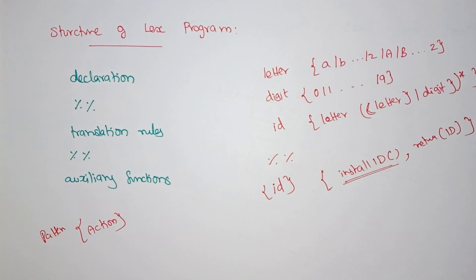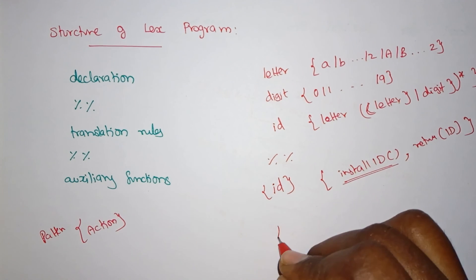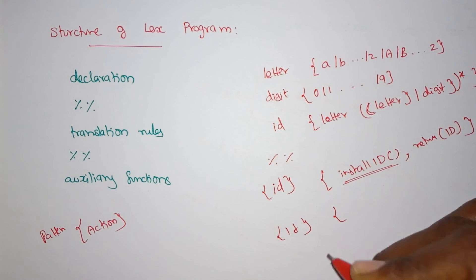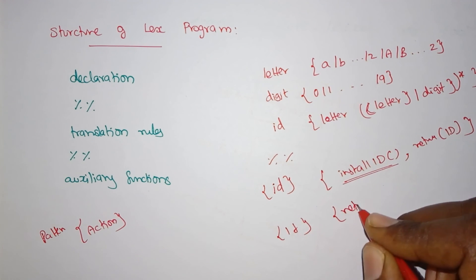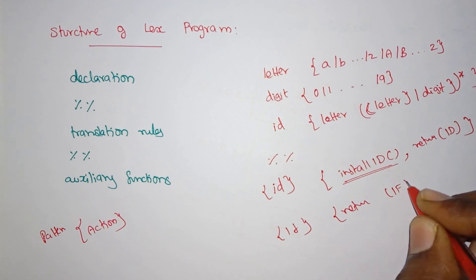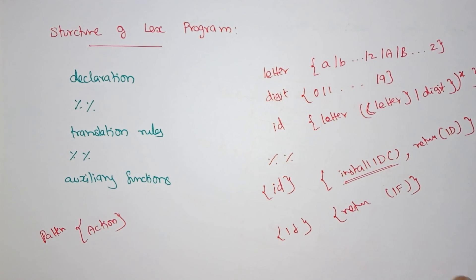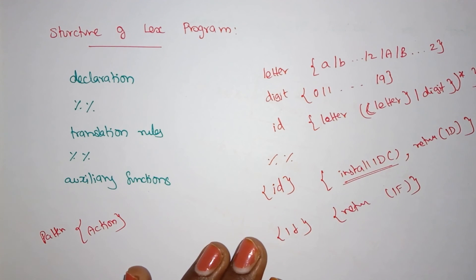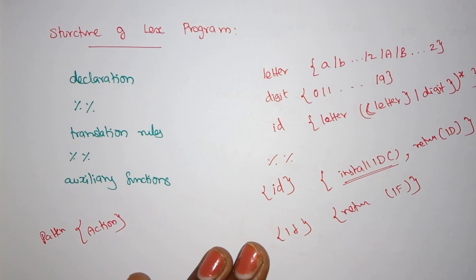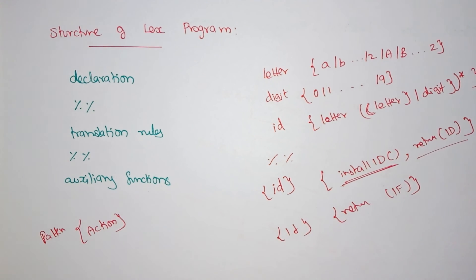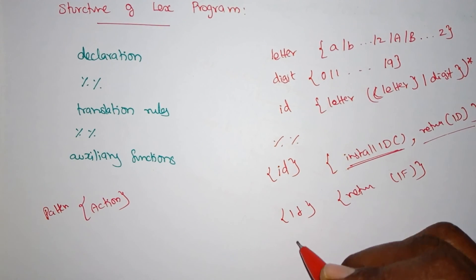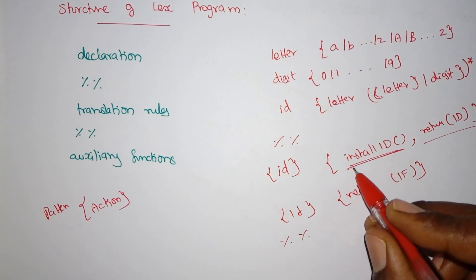The 'install_id' function installs the identifier in the symbol table and typically returns an integer value — 'return_id'. Similarly, when a keyword is encountered, it is directly returned as 'if'. So for keywords, we return directly; for identifiers, we call 'install_id' to check or update the symbol table and then return the identifier.